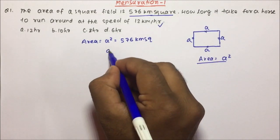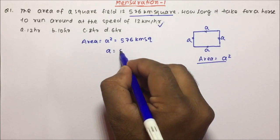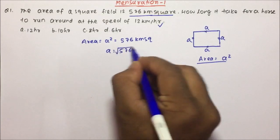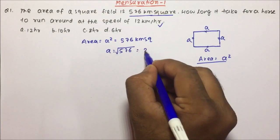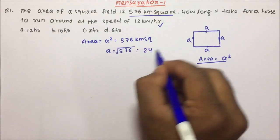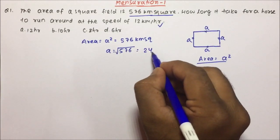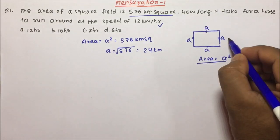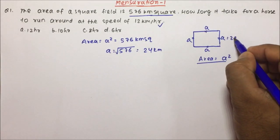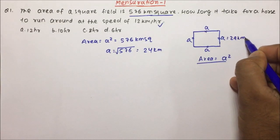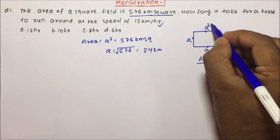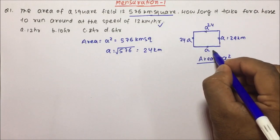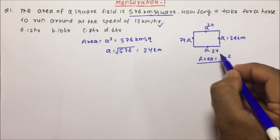So 'a' will become √576 km, which is nothing but 24. So the side will become 24 km. All four sides are 24, 24, 24 and 24.